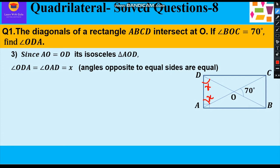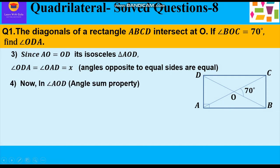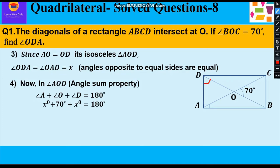Let it be equal to X degree. Now, further in triangle AOD, we shall apply angle sum property to calculate the value of X. So we will say angle A plus angle O plus angle D is equal to 180 degree. So X degree plus 70 degree plus X degree is equal to 180 degree.